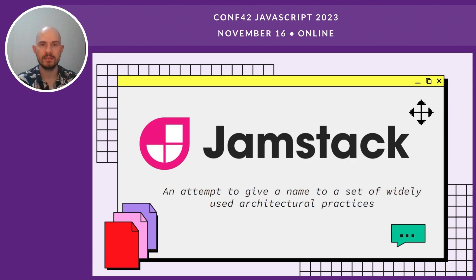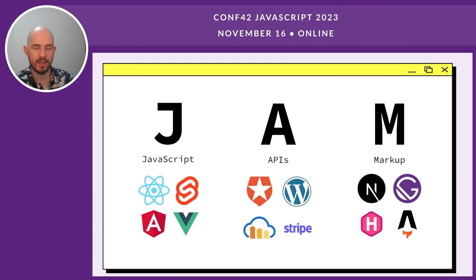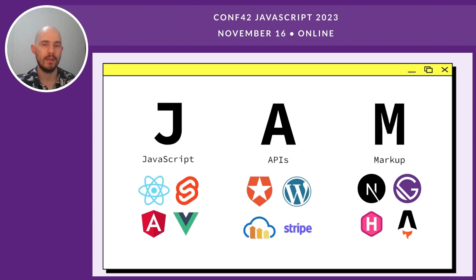A new term has emerged: JAMstack. It doesn't refer to a specific set of technologies — it's more of an attempt to give a name to a set of widely used architectural practices. The J stands for JavaScript, our preferred language because it's frontend-oriented, and we can use frameworks like React, Svelte, Angular, or Vue. The A stands for APIs, which is how we consume our services — things like Auth0, Cloudinary, Stripe, or WordPress. Here we see that WordPress is just one of the services we can consume.